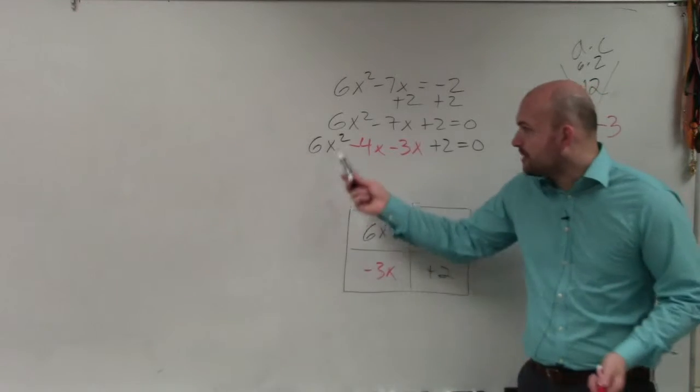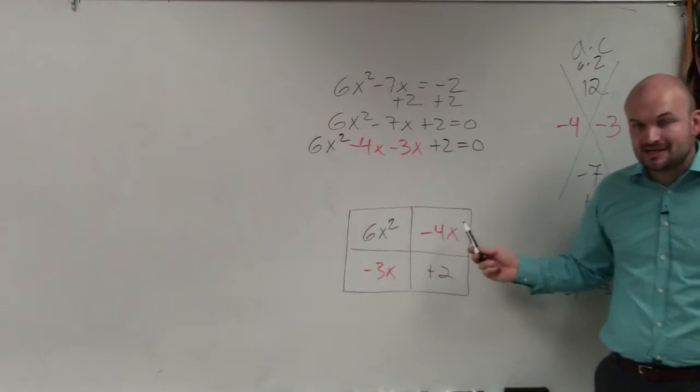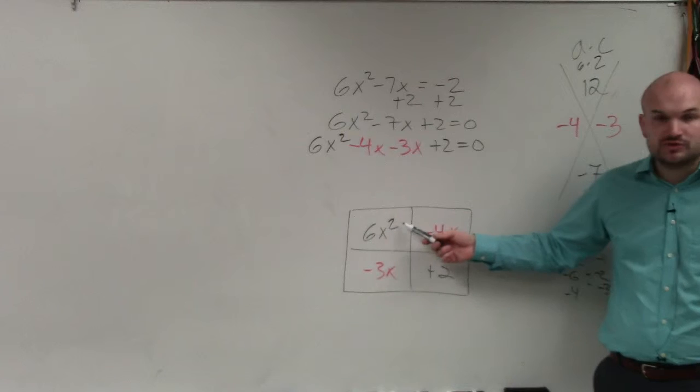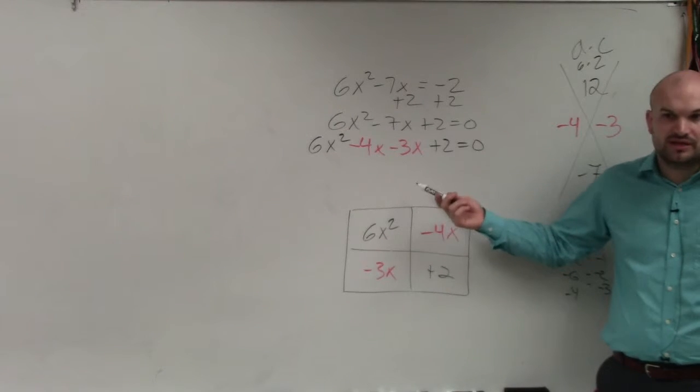So basically, what you do is you take your problem, fill up the box, and now figure out what do you multiply to give you 6x squared? What can give you 6x squared?